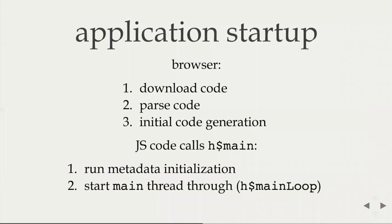When an application starts: the browser downloads the code, parses it, generates initial bytecode, and compiles to optimized machine code before any JavaScript can run. Then the run_main file calls H$main, passing the main action. That function sees that most of the Haskell runtime hasn't been initialized yet. It decodes the very large metadata string, builds all the top-level objects, and starts the Haskell lightweight threads, dispatching the rest of the main action. Parsing and code generation accounts for approximately two-thirds to 75% of startup time, and metadata initialization for the remaining 25% — so neither is free, unfortunately.